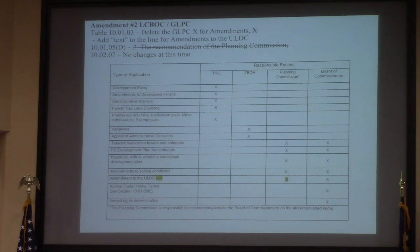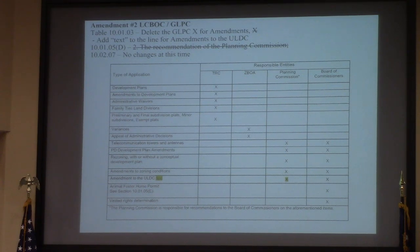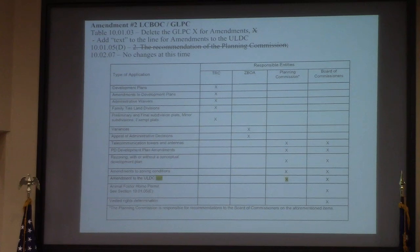Text Amendment 2 deals with how we handle text amendments, essentially removing the Planning Commission from the official process and adding just the word 'text' to the line. Any text amendments going forward will be presented by staff — Planning Commission, Home Builders Association, stakeholders, chamber, things like that — will be contacted as a courtesy through a standard email of any potential sit-down meetings. This amendment simply allows us to move forward with text amendments in a more expeditious manner.